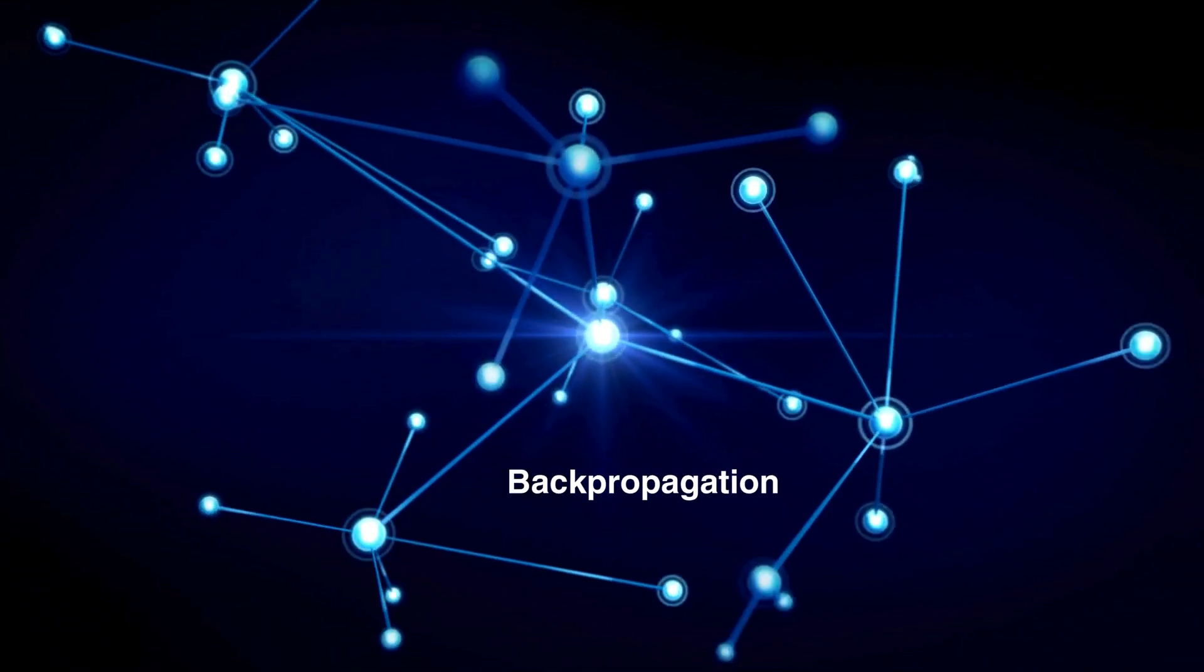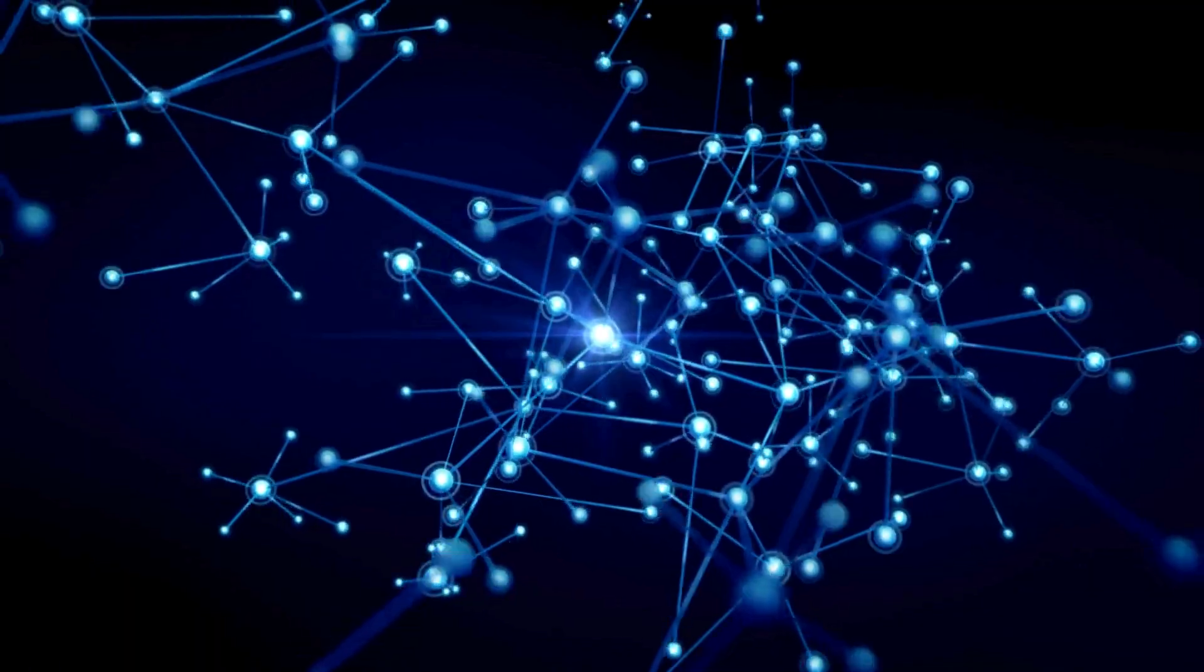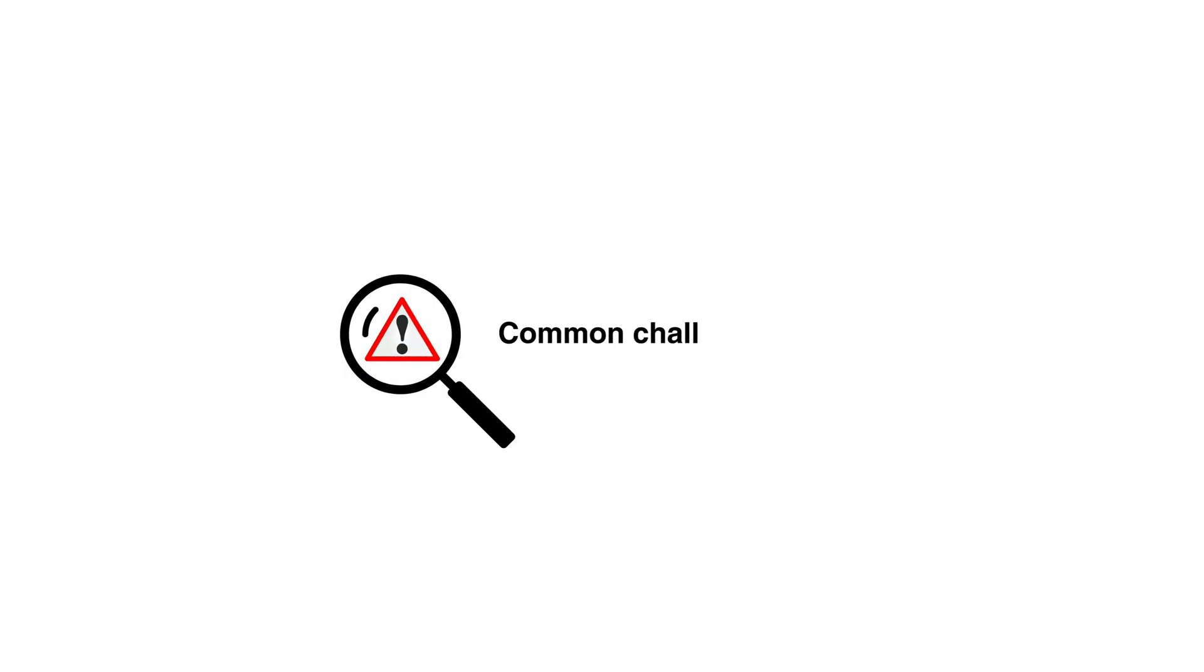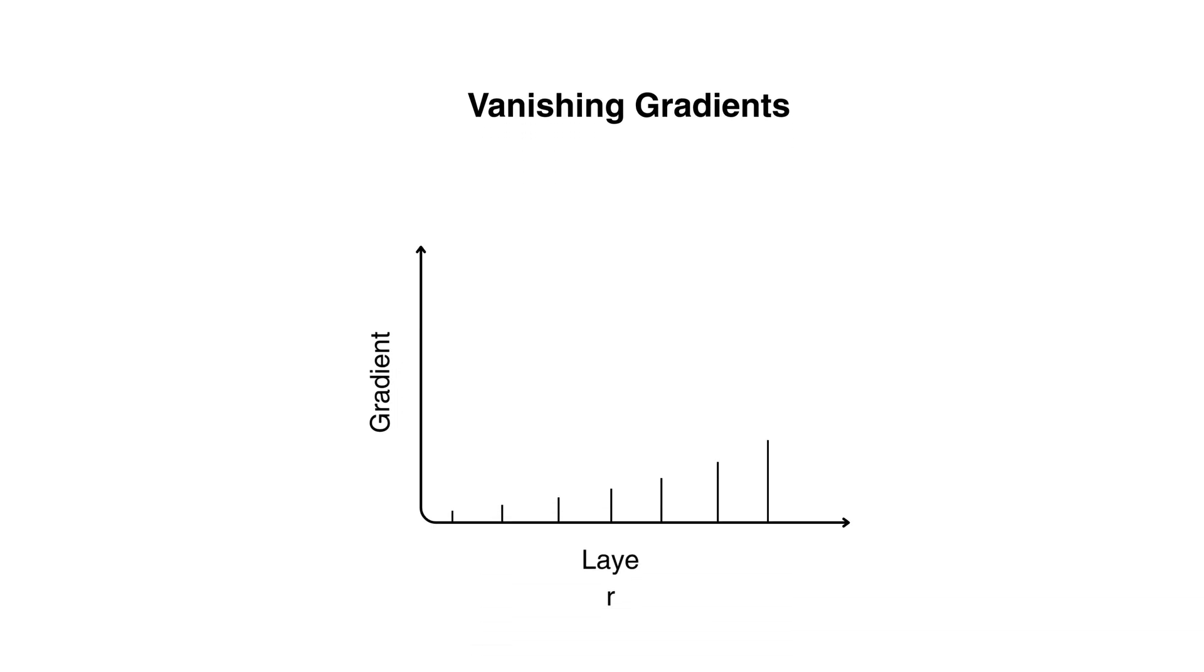Backpropagation is powerful, but it's not perfect. Let's talk about some common challenges. First is vanishing gradients. In very deep networks, the gradients can become so small that the weights barely update. This slows learning dramatically.